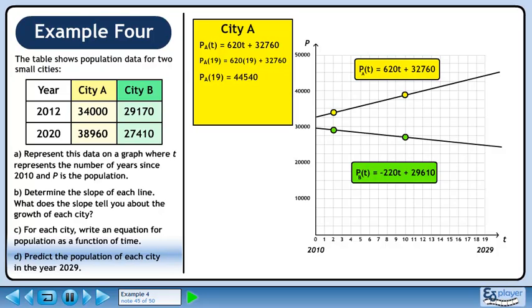Evaluate the right side to get 44,540. In the year 2029, city A will have 44,540 people.